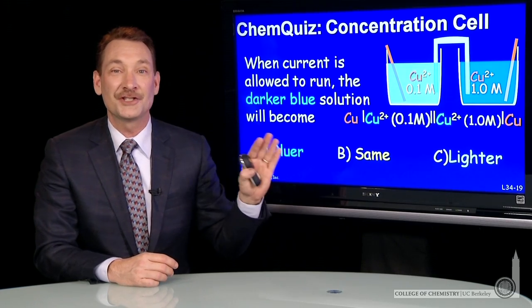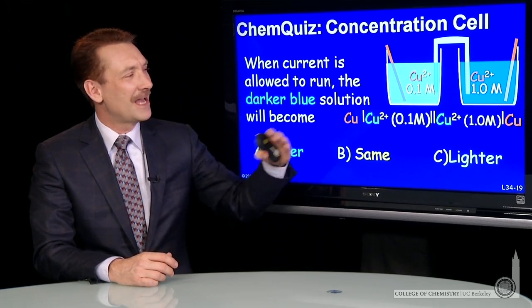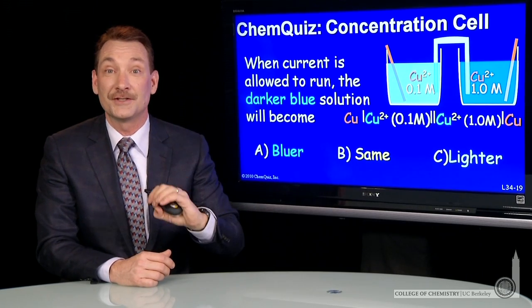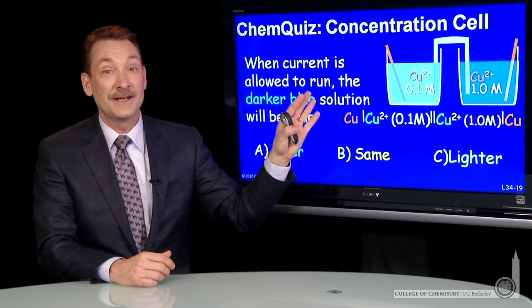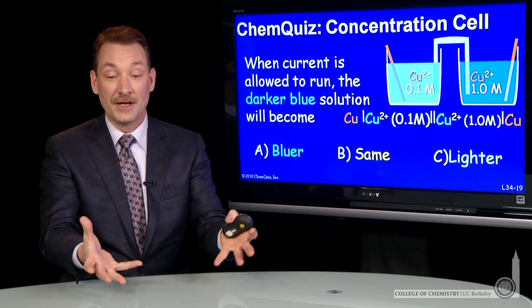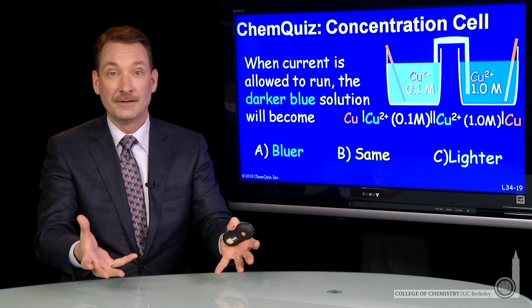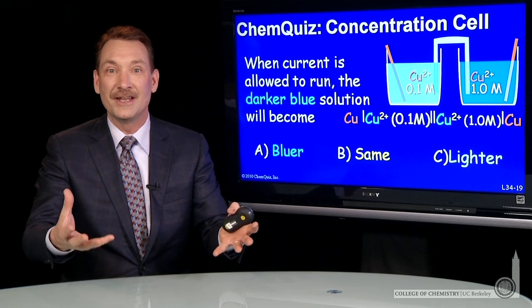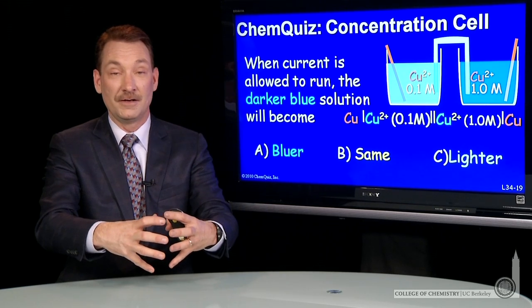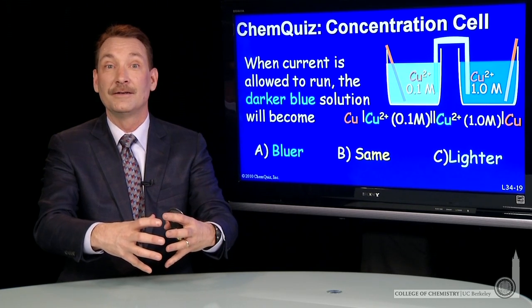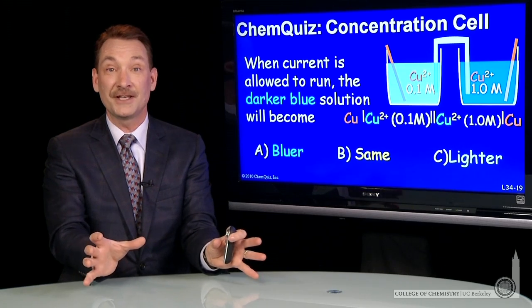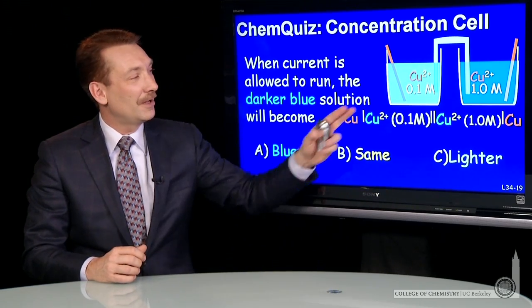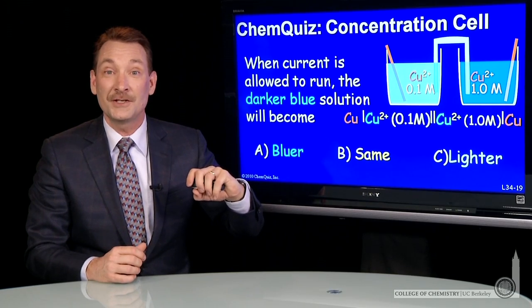We're talking about a concentration cell here — a galvanic cell where the two half cells have the same components, but the concentrations are different. Now, in other galvanic cells, if you let the cell operate, the end result is a full chemical reaction that you could have written as if everything was in one beaker. That is, the final result is the same whether you run it in two half cells or mix everything together. The same is true here in this concentration cell.